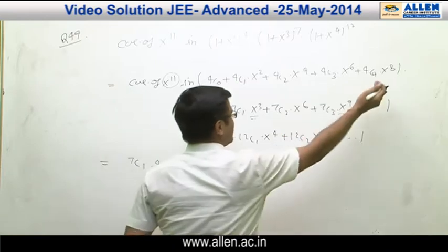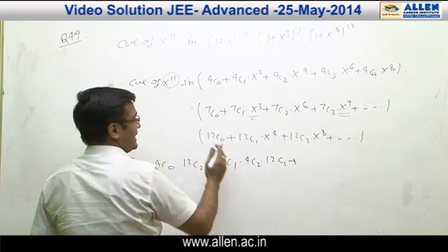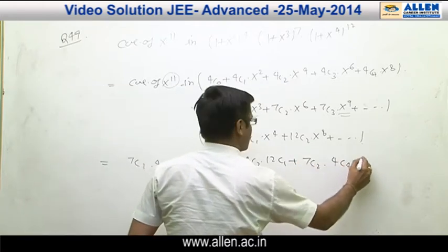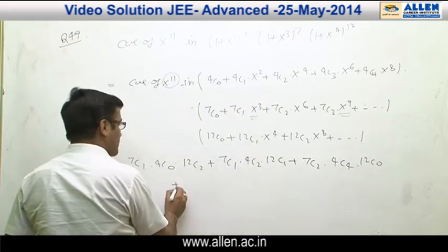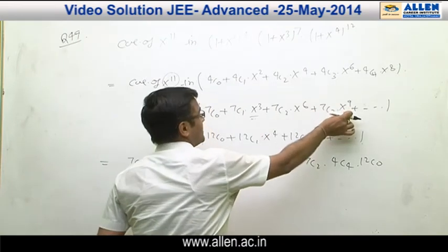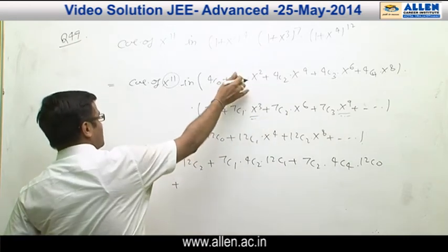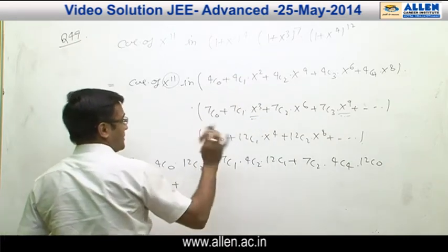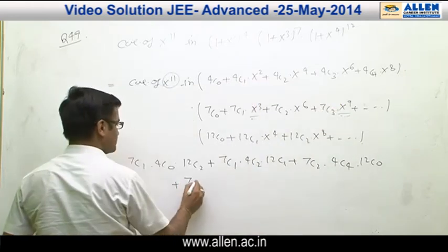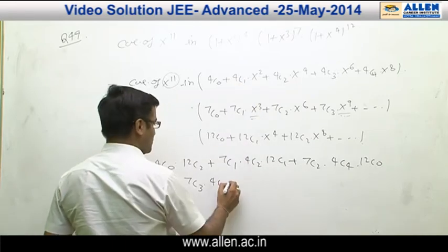If we pick x⁸ from the third bracket, we need x⁰ from the remaining, giving coefficient 7C2 · 4C4 · 12C0. The second possibility is taking x⁹ from the second bracket, then we need x² from the other two brackets. That gives coefficient 7C3 · 4C1 · 12C0.